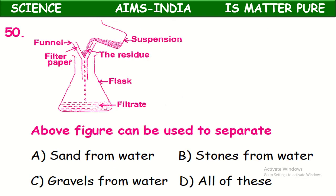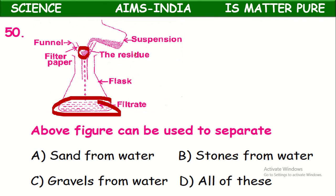Looking at the diagram, the above figure can be used to separate — what process is shown? It is filtration. A mixture of solid and liquid is poured through a funnel containing filter paper. Pure liquid comes through as filtrate; the solid substance remains in the filter paper, called residue. This process is filtration. From the given mixtures, sand from water can be separated: when the sand-water mixture is poured through filter paper, sand remains and pure water comes down as filtrate. Stones from water and gravels can also be separated this way — all these mixtures can be separated by filtration.